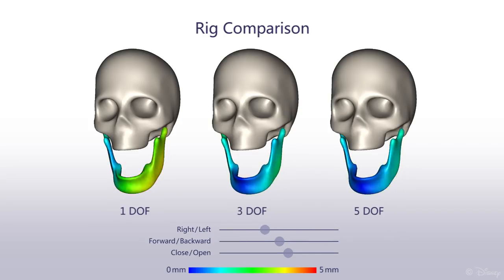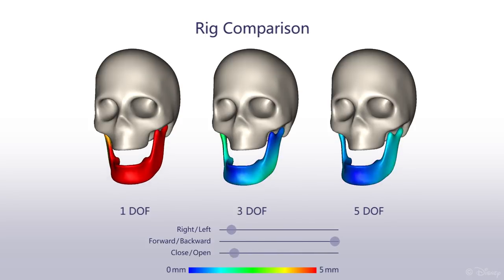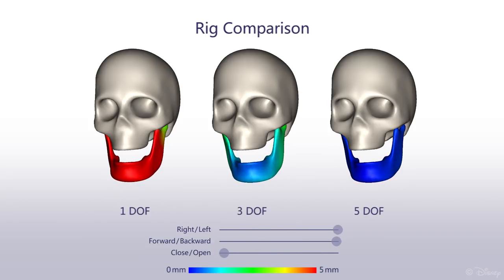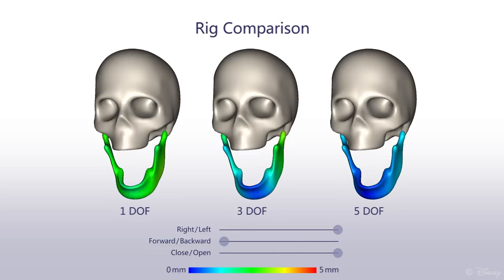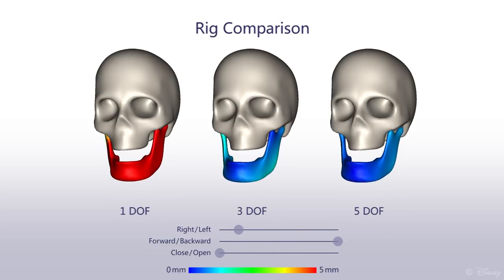Here we show the error made by traditional rigs fitted to the jaw poses created using random slider motion with our rig. As expected, even a 5 degree of freedom rig cannot reproduce the torsion of the jaw.